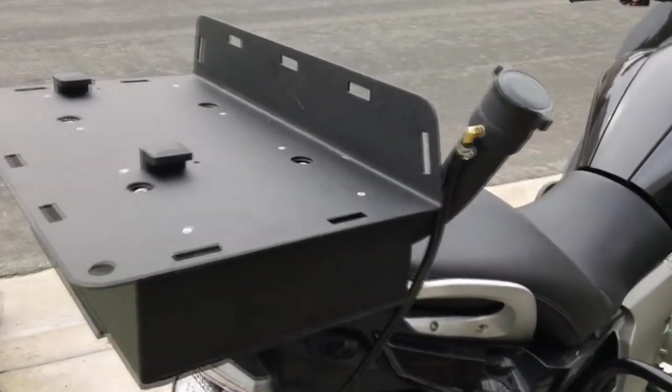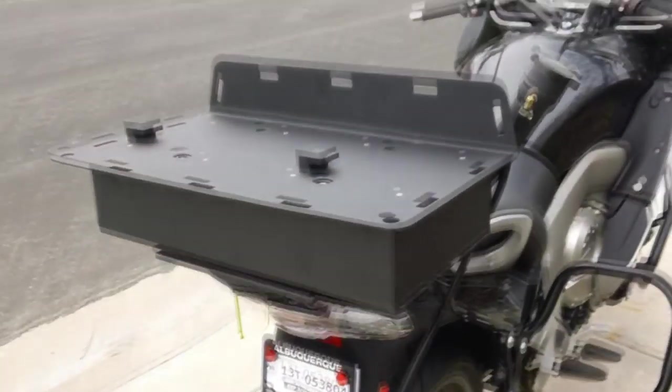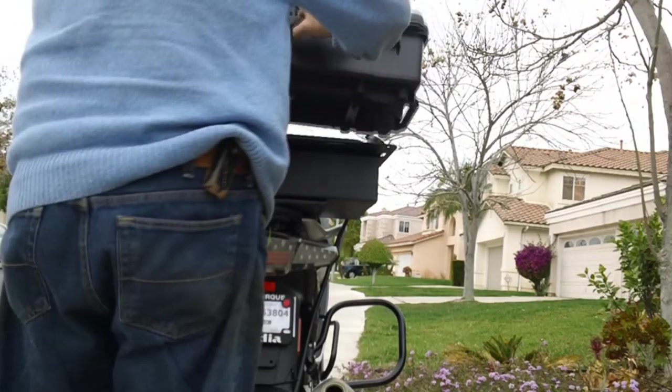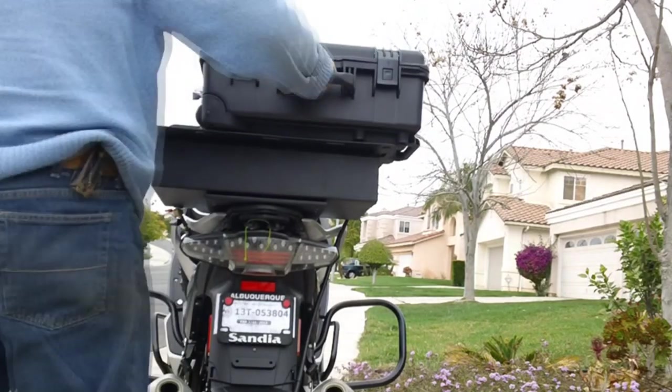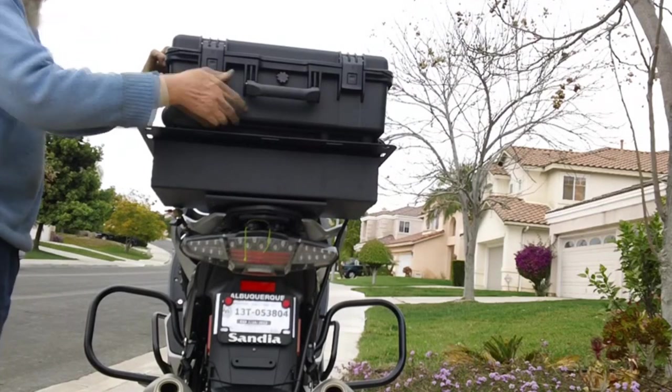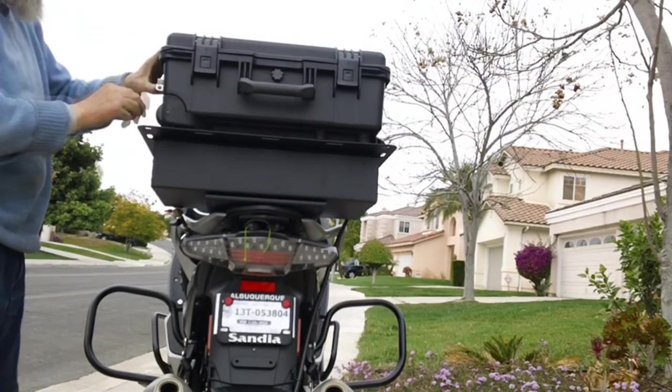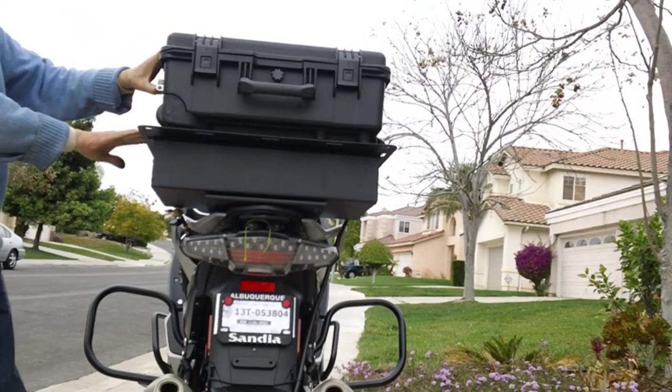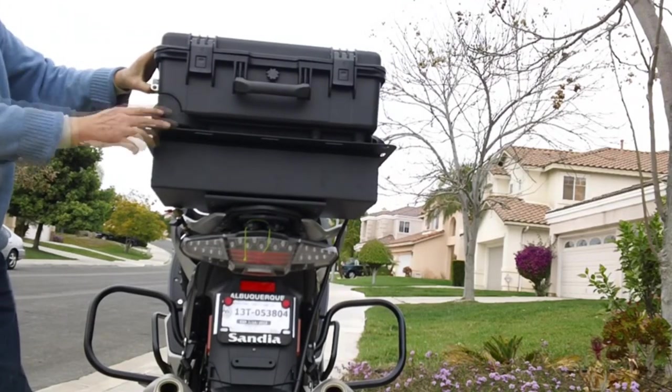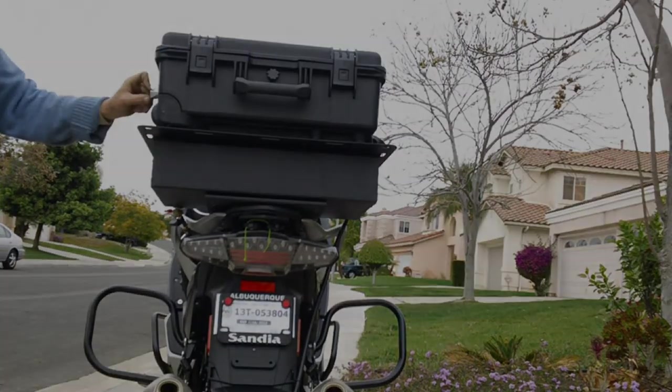Next we will demonstrate mounting the optional Pelican Storm case. We use the wheeled airline carry-on qualified IM2500 case because it is easily modified for our quick release mechanism. Center the case on the deck, slide it to the left, making sure both L brackets are engaged, and then secure the latch. The commercial bolt latch is padlockable.